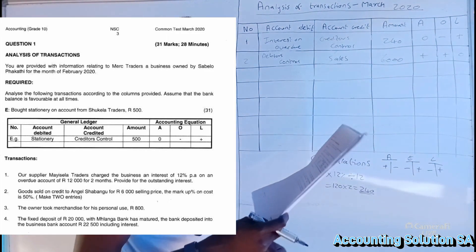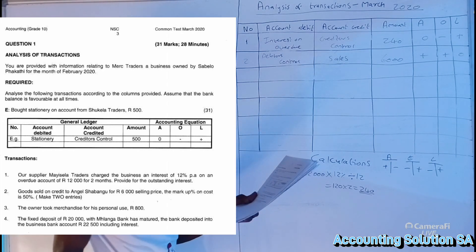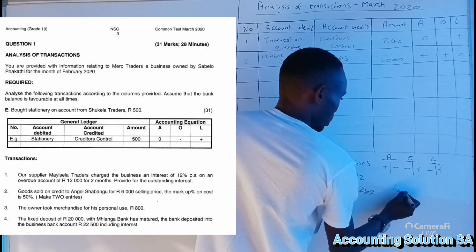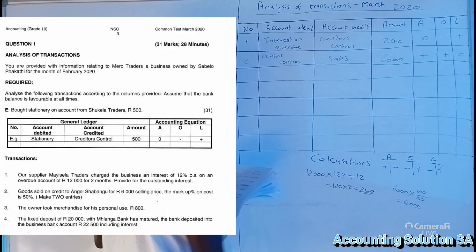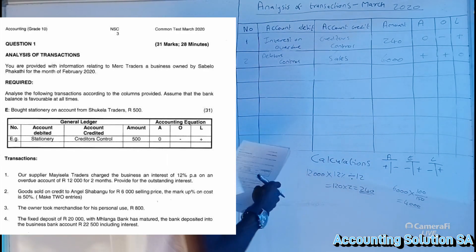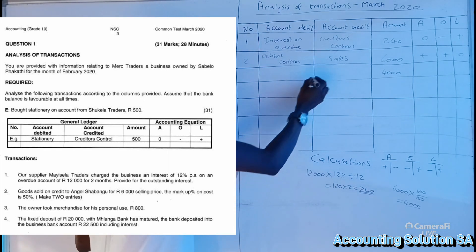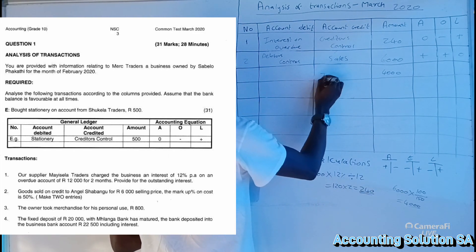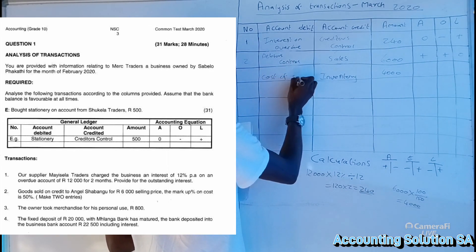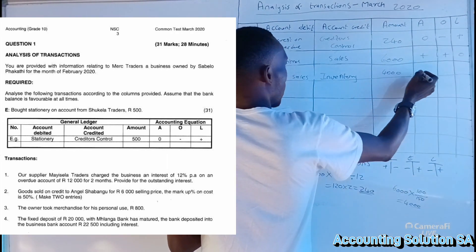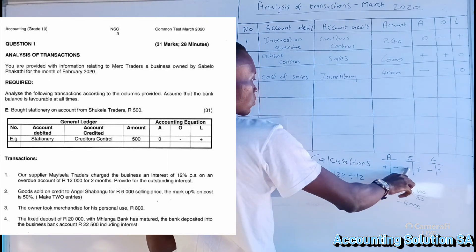For the second entry, we calculate the cost price. With a 50 percent markup, we calculate: R6,000 × 100/150 = R4,000 cost price. So we purchased it for R4,000 and are selling it for R6,000. We record that inventory goes out of our assets, and we record Cost of Sales. Inventory is minus on the asset side, and Cost of Sales is minus on Owner's Equity side because it is an expense.